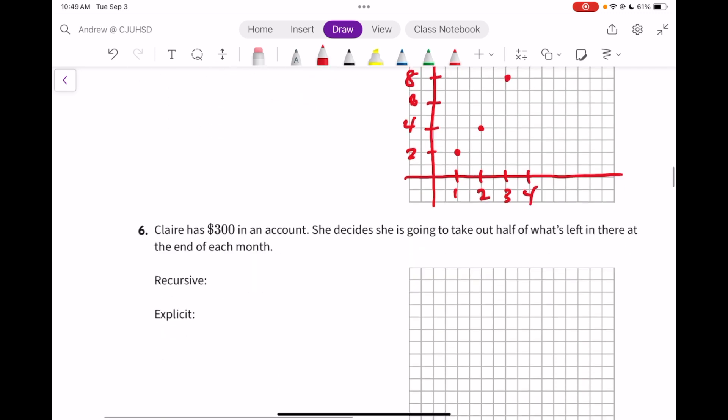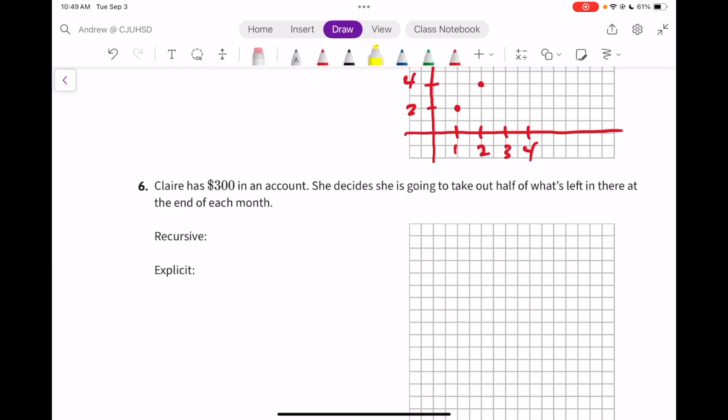On number 6, Claire is starting with $300. And she's going to take out half. When she takes out half, that is a common ratio of 1 half. Most students like to work with the decimal 0.5. So I take next equals half times previous or 0.5 times previous. Explicit would be the first number times the common ratio. I'll use the decimal this time to the n minus 1.